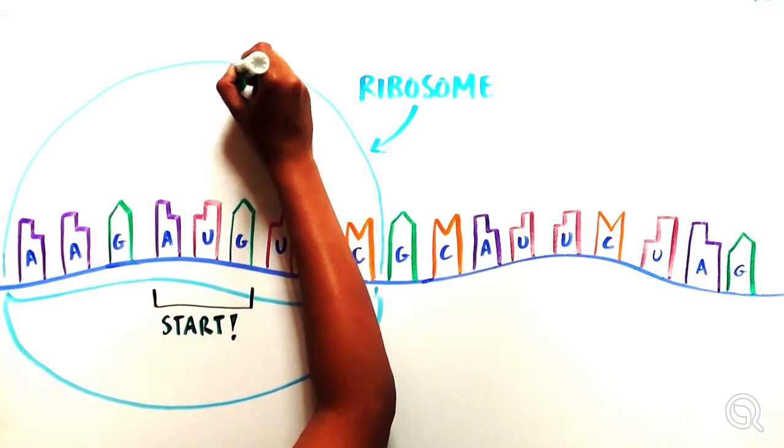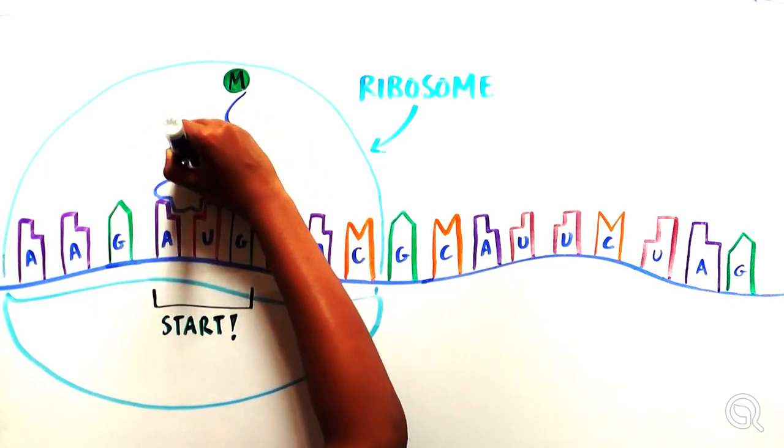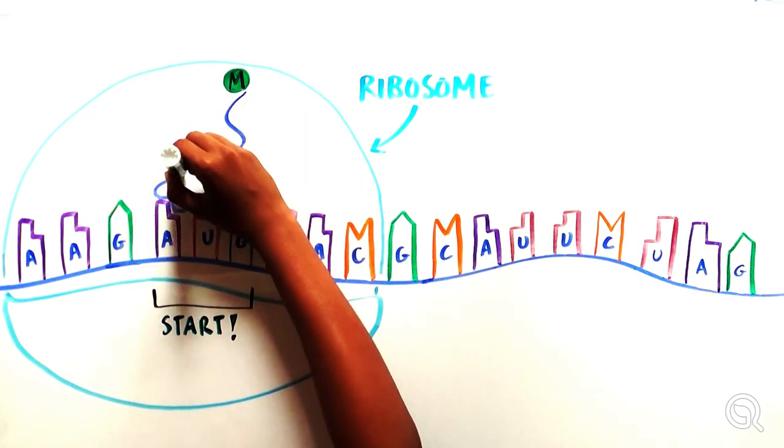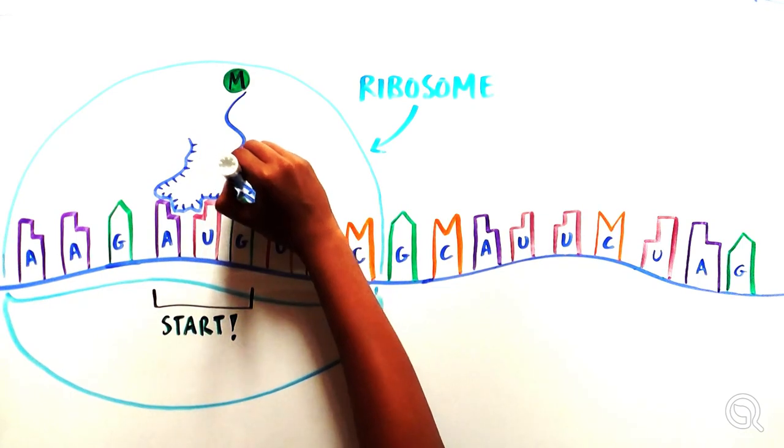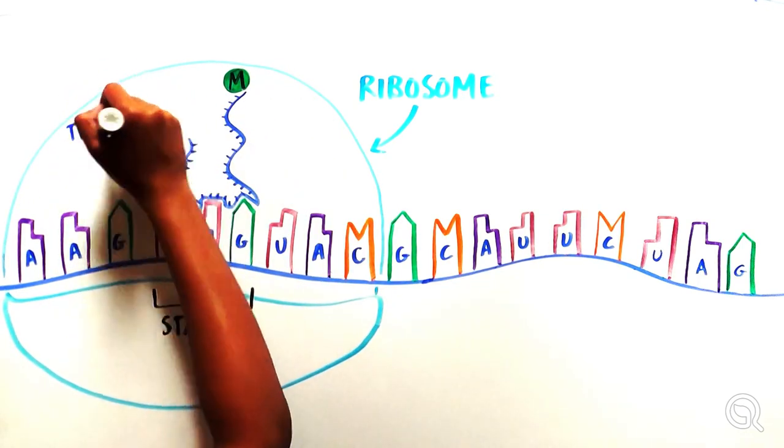In order to translate a codon into an amino acid, another kind of RNA called a transfer RNA, or tRNA, binds an amino acid on one end and matches up with the corresponding codon from the mRNA on the other end.